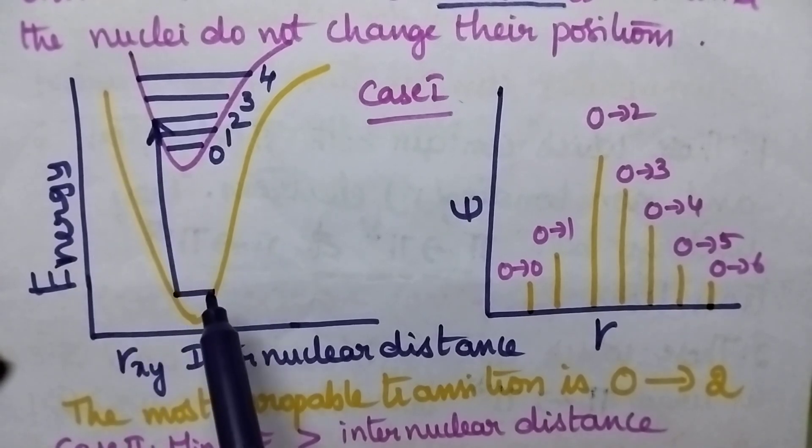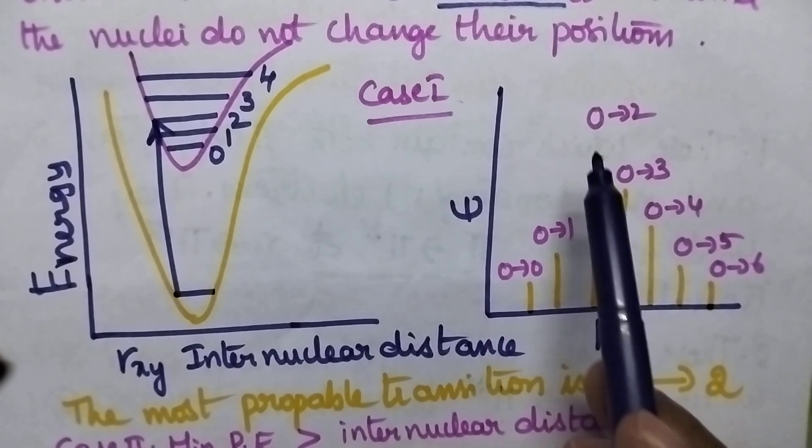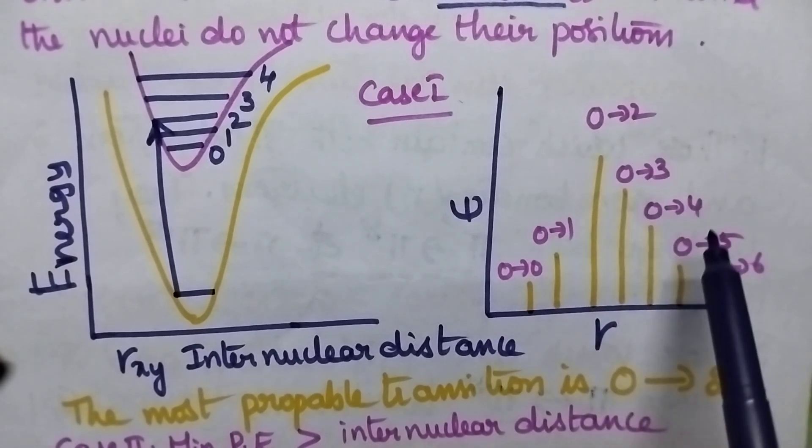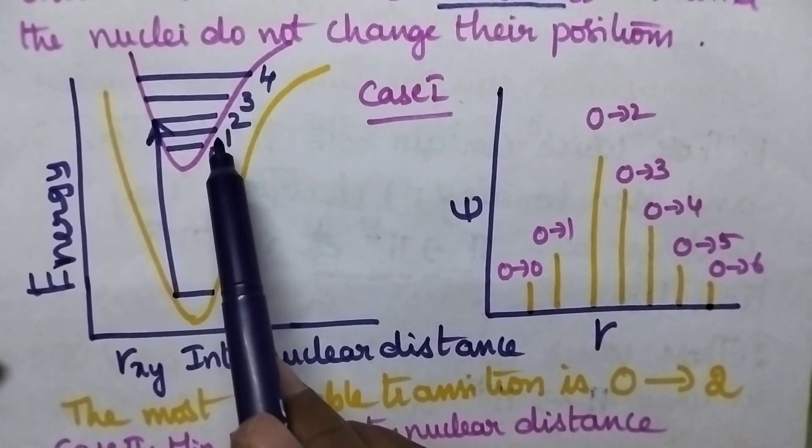We can observe different types of transitions: 0 to 0, 0 to 1, 0 to 2, 0 to 3, 0 to 4, 0 to 5, 0 to 6. This is the ground state and that is the excited state.